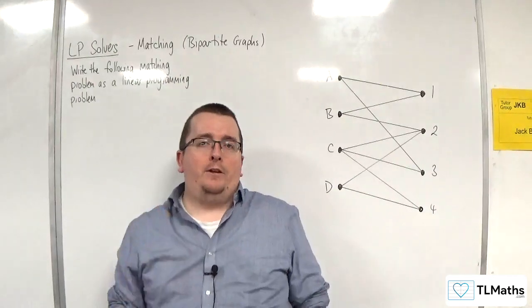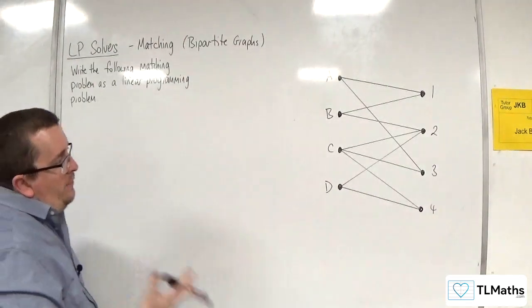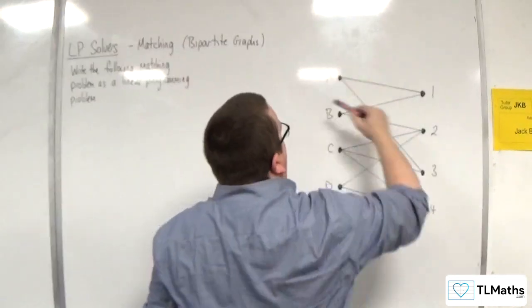We're now going to be looking at matching problems, and we're going to be using bipartite graphs. So here is a bipartite graph. It's a bipartite graph because you have two distinct sets of vertices.